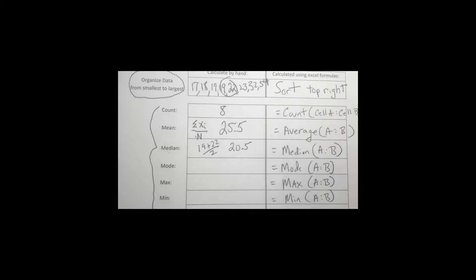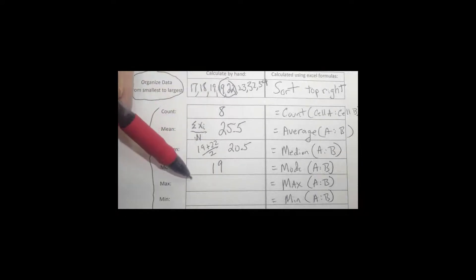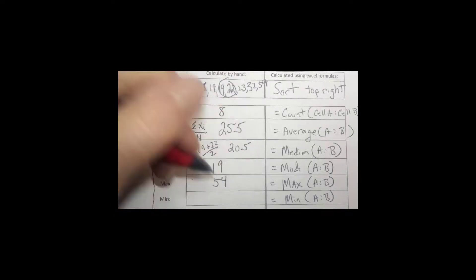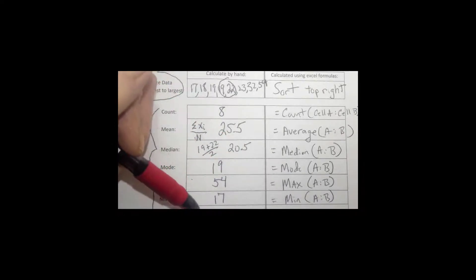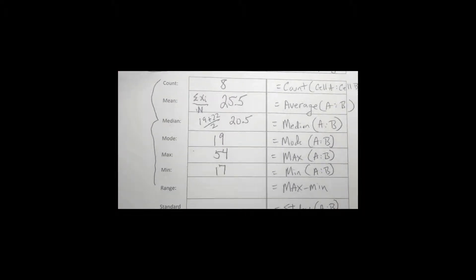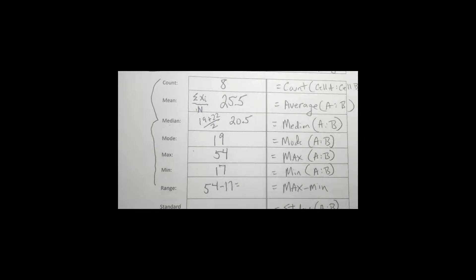The mode is the value that occurs most frequently. In this data set, 19 occurs twice and none of the others occur more than once, so the mode is 19. The maximum is simply the highest data value, which is 54. The minimum is the smallest value, which is 17. The range is max minus min — 54 minus 17 equals 37.